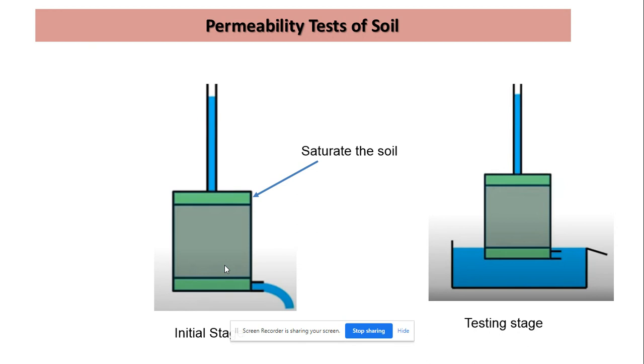Before we perform the falling head permeability test, we have to ensure that the soil is completely saturated. In case of fine soils, they have water holding capacity. If we don't saturate it, water will be held within the pores between the soil particles, and the water entering will not entirely pass through the soil.